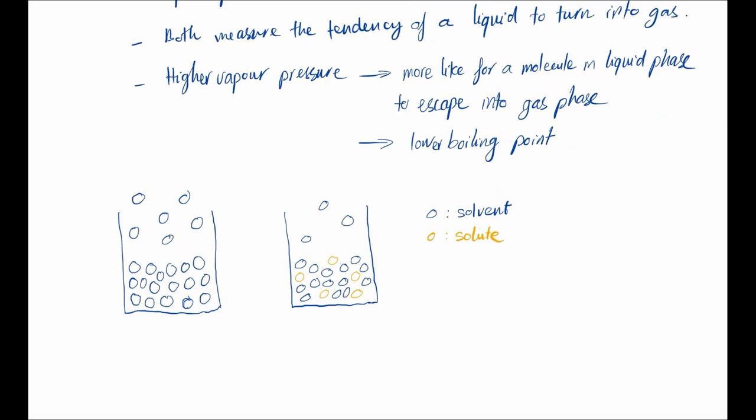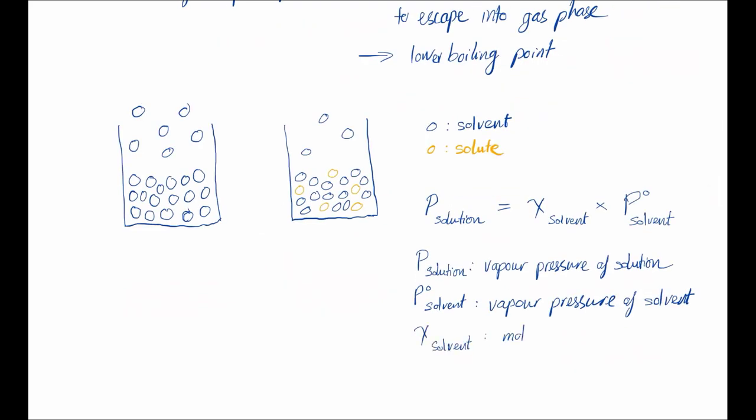So here's the equation. Vapor pressure of solution is equal to the mole fraction of the solvent times the vapor pressure of the solvent. The mole fraction is just the ratio between the number of moles of the solvent and the total number of moles, which equals the sum of the number of moles of the solute and the number of moles of the solvent.